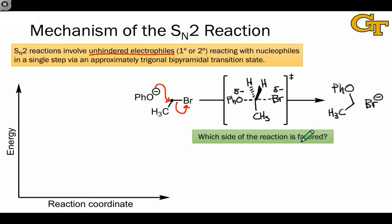To draw a reaction coordinate diagram for this process, we first need to figure out which side of the reaction is favored thermodynamically. And if you recall our previous discussions of stability trends, you know what molecules to look at to make this decision. The ions.